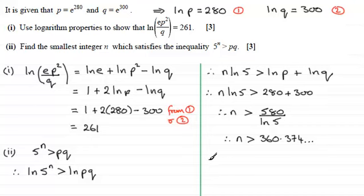Now, we're told that n is an integer, and we're asked to find the smallest integer value for n. So the smallest integer value for n has got to be equal to, well, we're looking for the first integer that is greater than that value, and it's got to be 361.